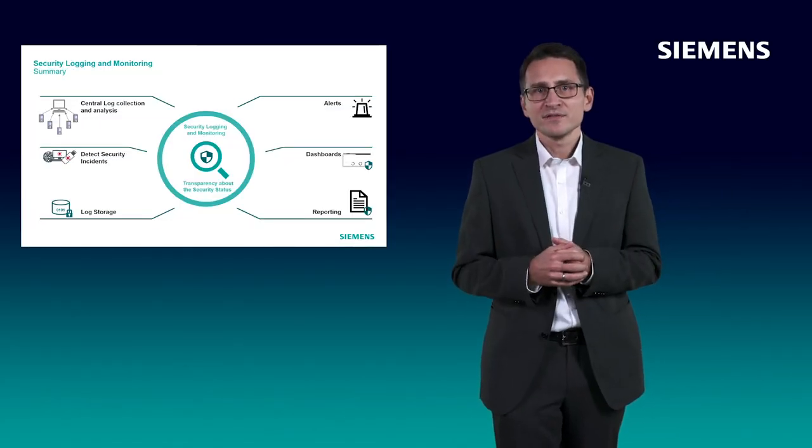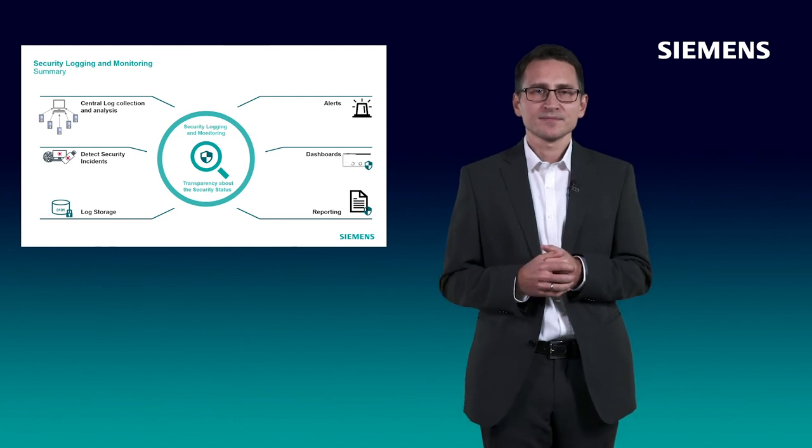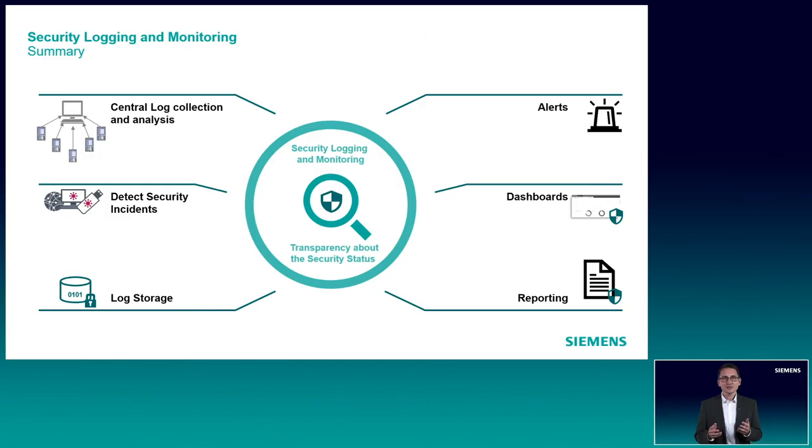Let's summarize the benefits of a logging and monitoring solution. All security-relevant logs are collected and analyzed in a single system. This is a prerequisite to correlate the log information from different components and to get a full picture of the security status. Detect anomalies and security incidents. The main purpose of a security logging and monitoring solution is to detect security incidents. This is achieved by continuous analysis of the incoming logs. An OT-specific set of alert rules ensures that content of the logs is interpreted in the right way.